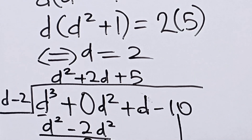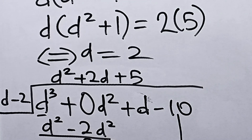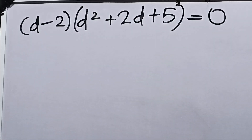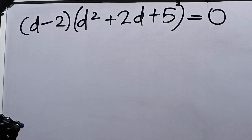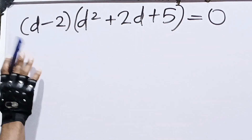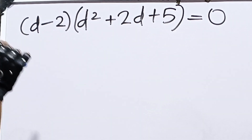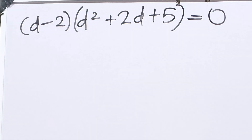The quotient of the division is d squared plus 2d plus 5. This means our second factor is d squared plus 2d plus 5. So we have d minus 2 times d squared plus 2d plus 5 equals 0. When you divide the polynomial by a factor and get zero remainder, the result is another factor.